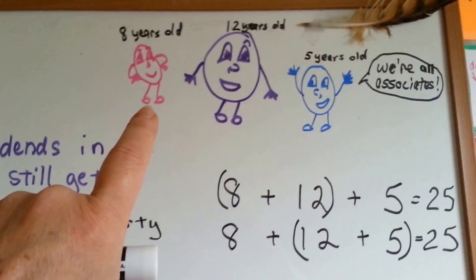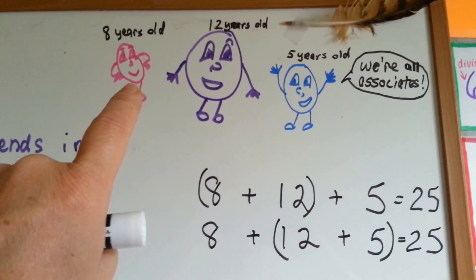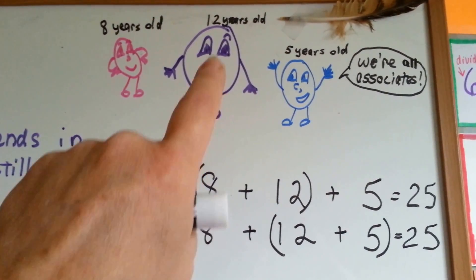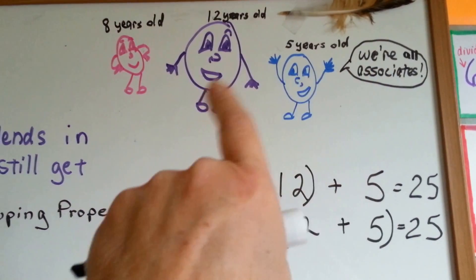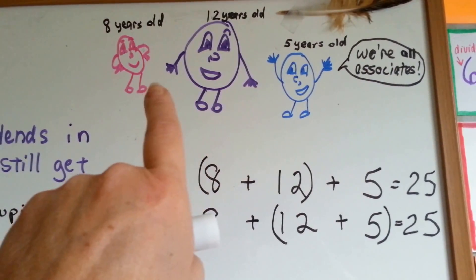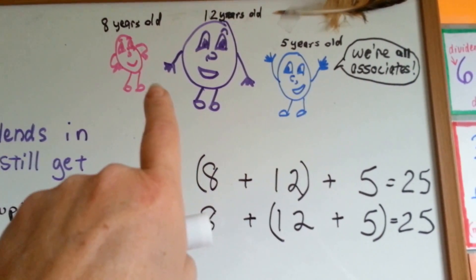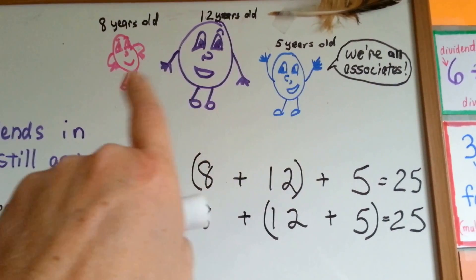So let's take a look at our little people here. If the pink one is 8 years old and the purple one is 12 years old and the blue one is 5 years old, see, they're associates. Associates are people you work with or people that you hang around with. So it's like they're friends.